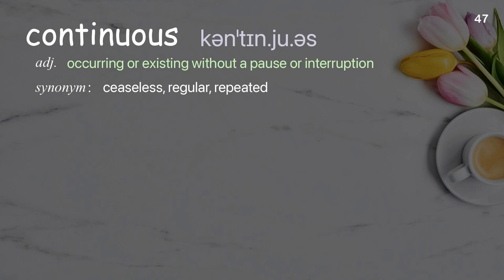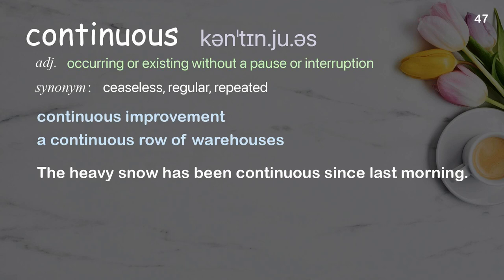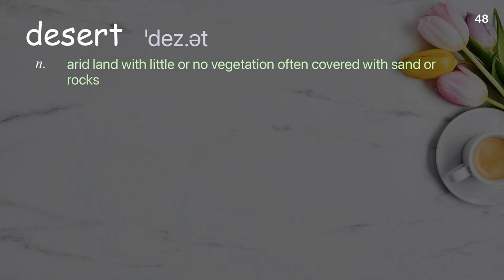Continuous: Occurring or existing without a pause or interruption. Examples: Continuous improvement, A continuous row of warehouses. The heavy snow has been continuous since last morning.